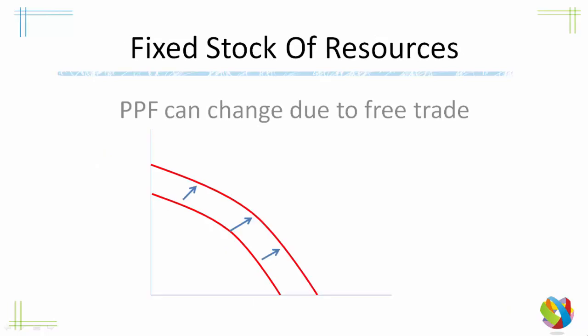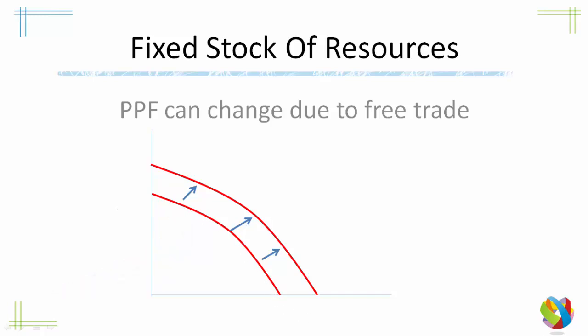The theory also assumes that resources are fixed. Looking at this graph, we start with a production possibility frontier. But as we begin to trade, we start to learn things from those we're trading with — we get better at production because we've imported technology and skills. So our production possibility frontier should push outward, because we're getting more efficient.